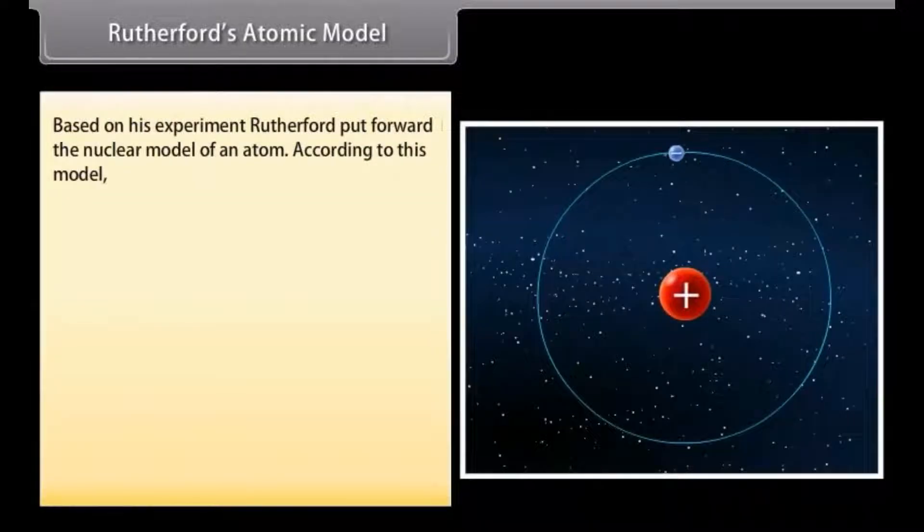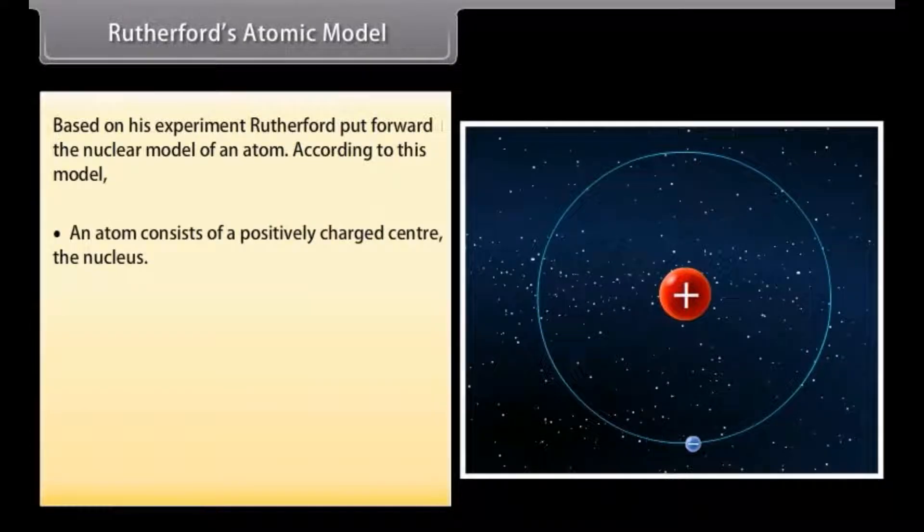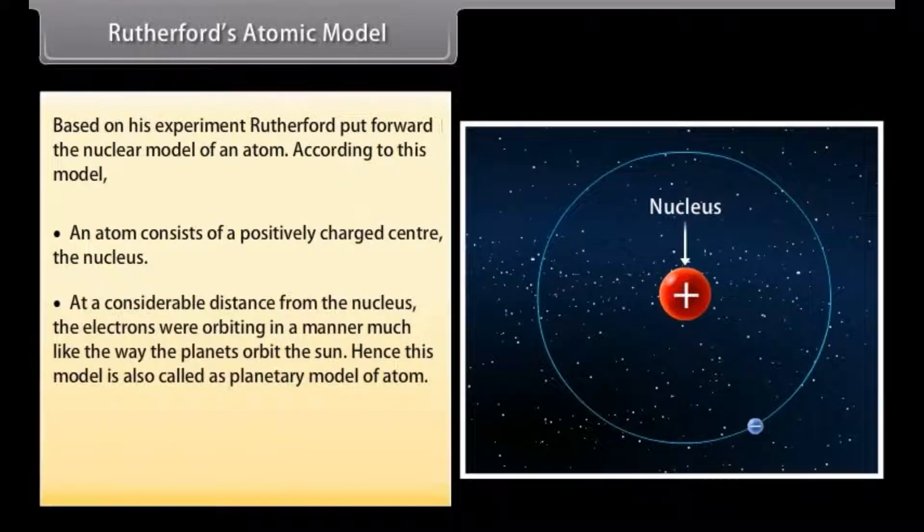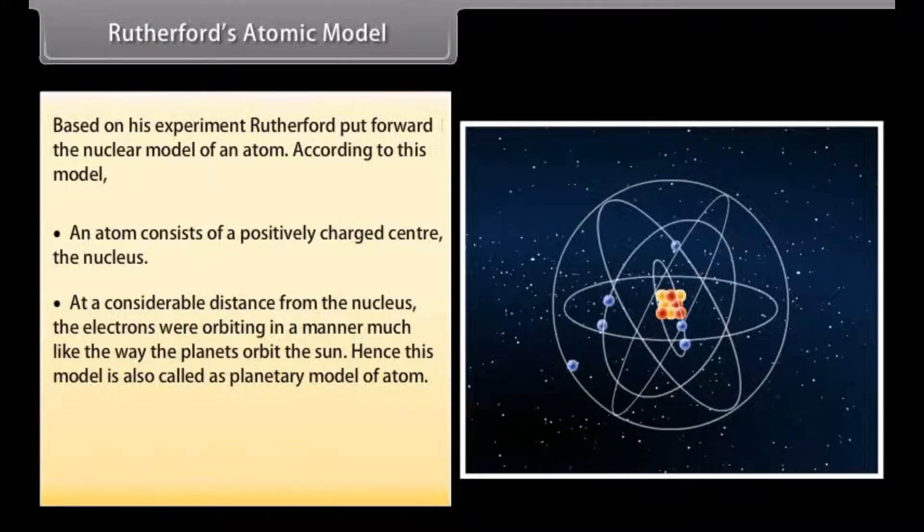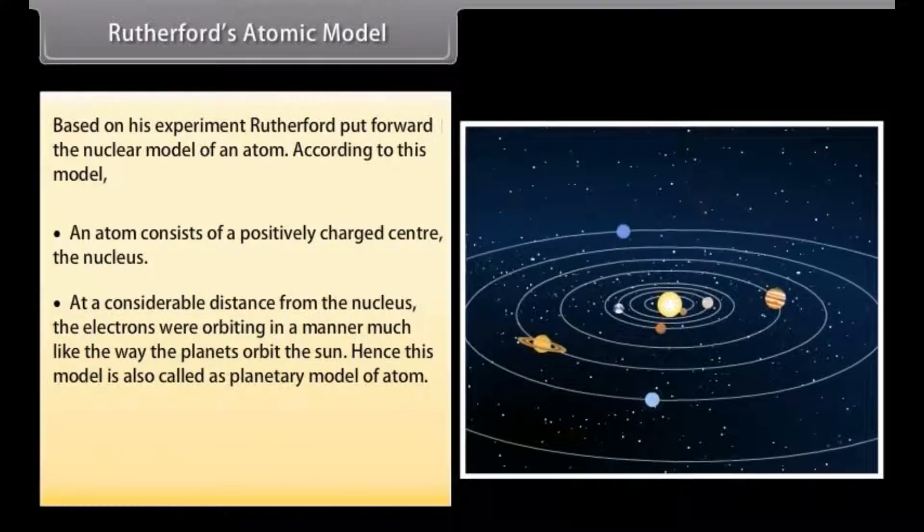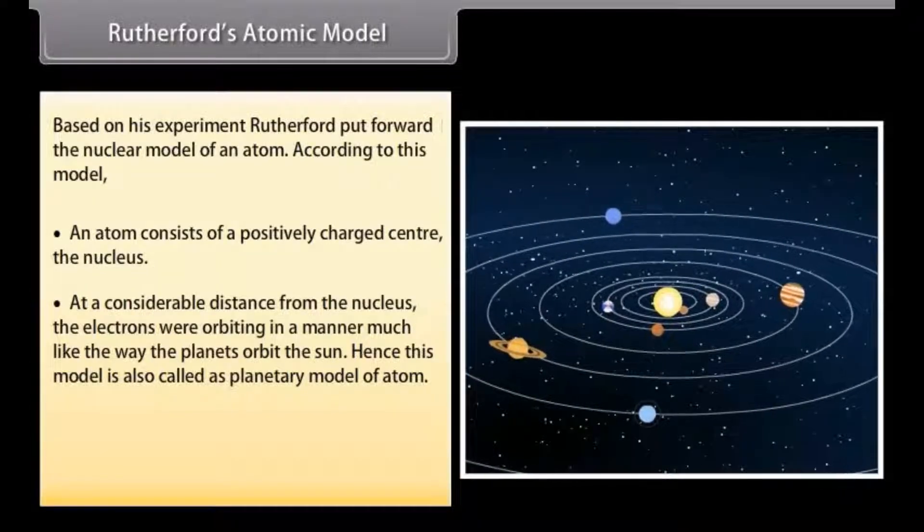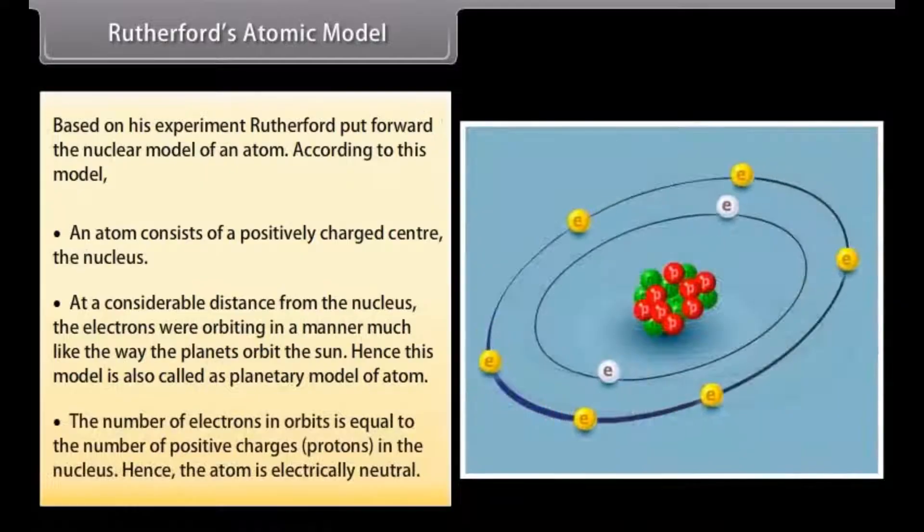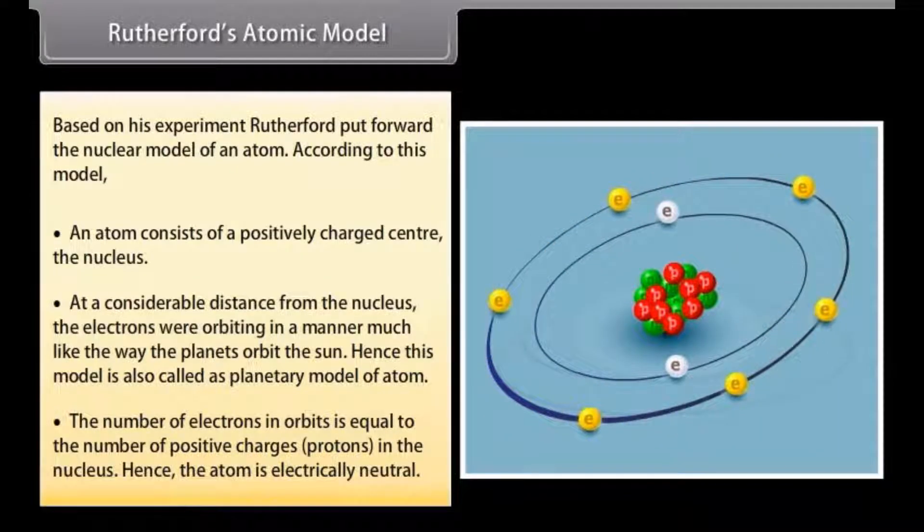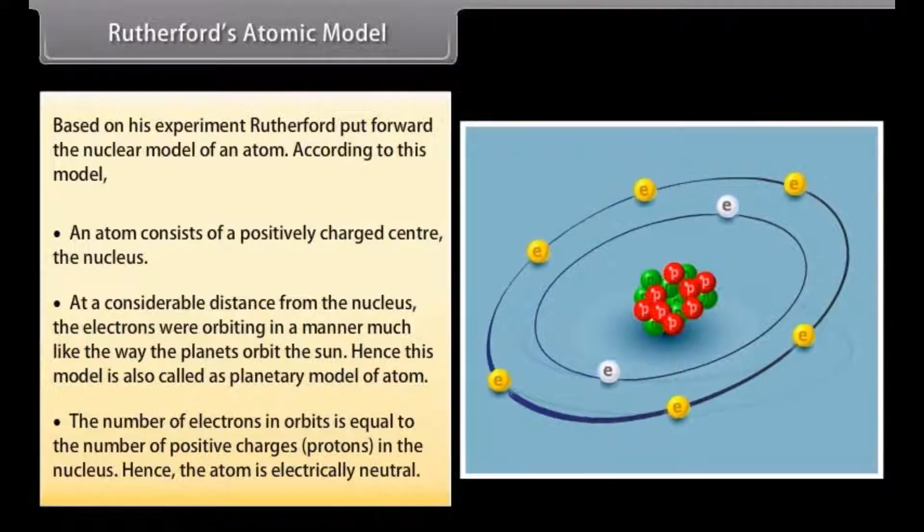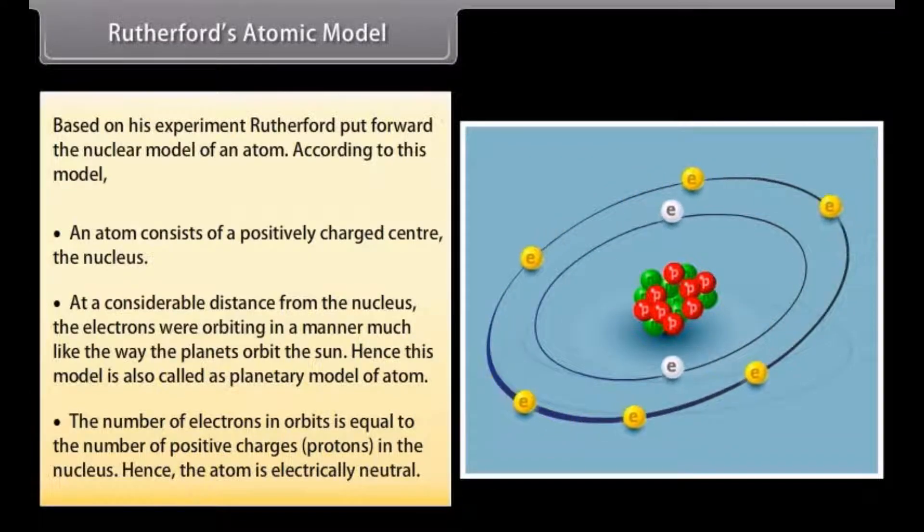Rutherford's Atomic Model. Based on his experiment, Rutherford put forward the nuclear model of an atom. According to this model, an atom consists of a positively charged center, the nucleus. At a considerable distance from the nucleus, the electrons were orbiting in a manner much like the way the planets orbit by a nucleus. Hence, this model is also called as planetary model of the atom. The number of electrons in orbits is equal to the number of positive charges, protons, in the nucleus. Hence, the atom is electrically neutral.